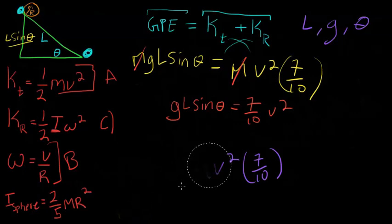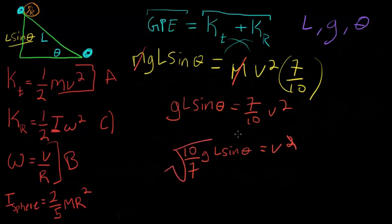Hopefully, I can erase this. No one's going to be bothered by that. And then, I mean, you know, it's just moving stuff around. GL sine theta equals V squared. In order to get rid of that, we're going to square root both sides. That is going to be the equation that's equal to the velocity at the end of the ramp.